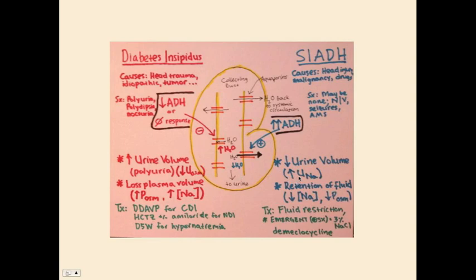Review summary for SIADH: causes include head injury, malignancy, and drugs. Symptoms may be absent or include nausea, vomiting, seizures, and altered mental status from hyponatremia. Elevated ADH causes high water reabsorption, resulting in low urine volume, increased urine sodium concentration, retained plasma fluid, and decreased plasma sodium concentration and osmolality. For symptomatic SIADH, use 3% NaCl — correct no faster than 0.5 to 1 mEq/L per hour to avoid central pontine myelinolysis. For chronic management: fluid restriction below 1.5 L/day and demeclocycline.